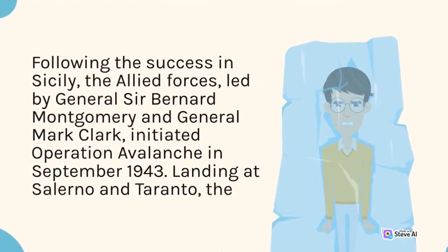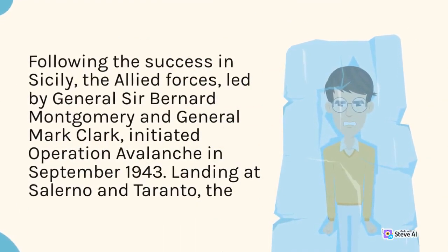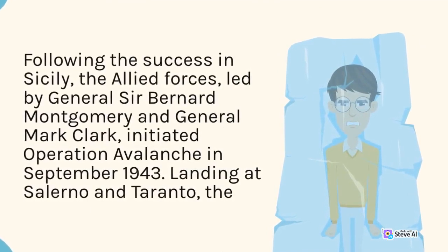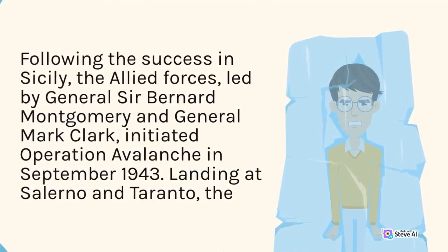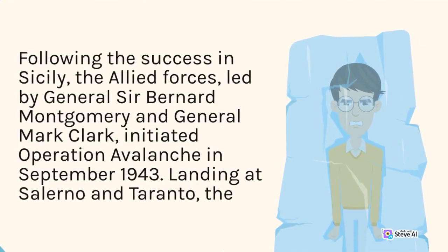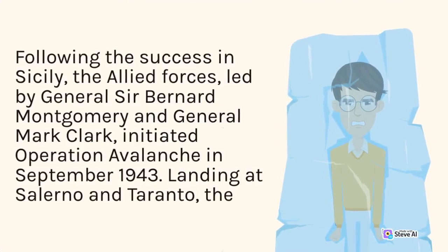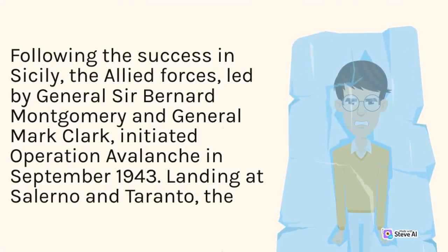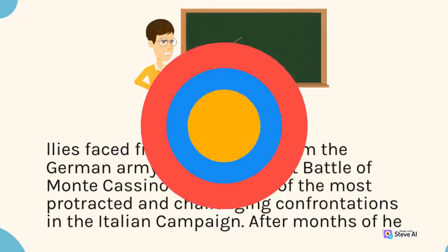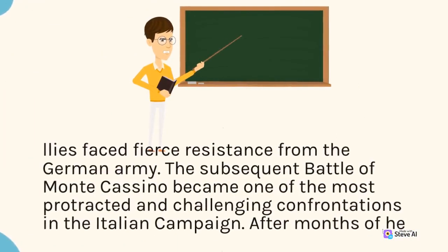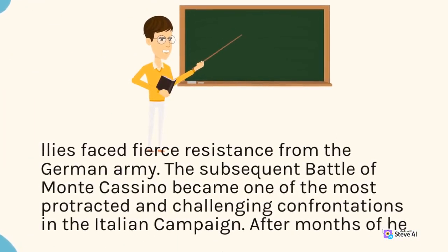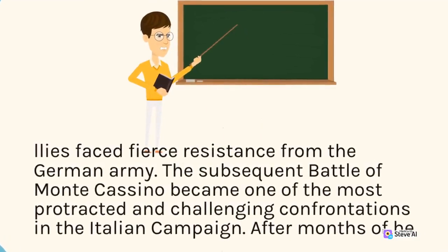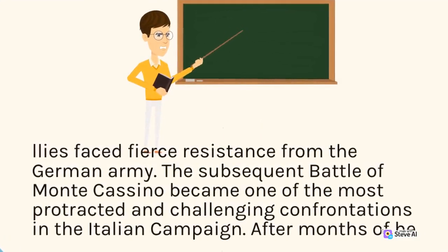Following the success in Sicily, the Allied forces, led by General Sir Bernard Montgomery and General Mark Clark, initiated Operation Avalanche in September 1943. Landing at Salerno, they faced fierce resistance from the German army. The subsequent Battle of Monte Cassino became one of the most protracted and challenging confrontations in the Italian campaign.